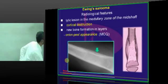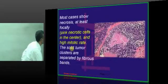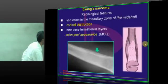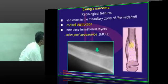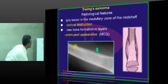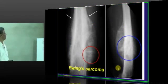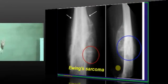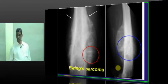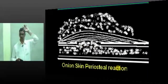This is what is called cortical destruction. Then layer after layer of new bone formation — you can see on this original X-ray layer after layer, and that is what is called the onion peel appearance.